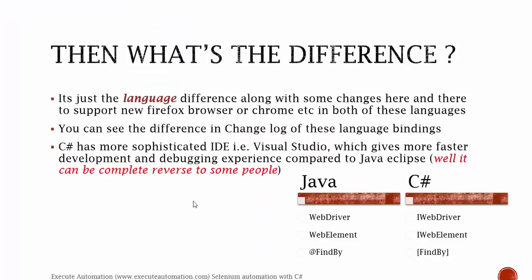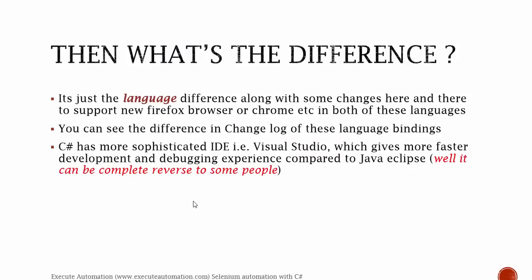C Sharp has a more sophisticated IDE — Visual Studio — which gives you a faster development and debugging experience compared to Java's Eclipse. Personally, I prefer Visual Studio as the most sophisticated IDE experience compared to Eclipse. That said, Visual Studio comes with a cost whereas Eclipse is free, and that is a major difference. Other than that, I don't see any real difference between Java Selenium and C Sharp Selenium — it's all pretty much the same.